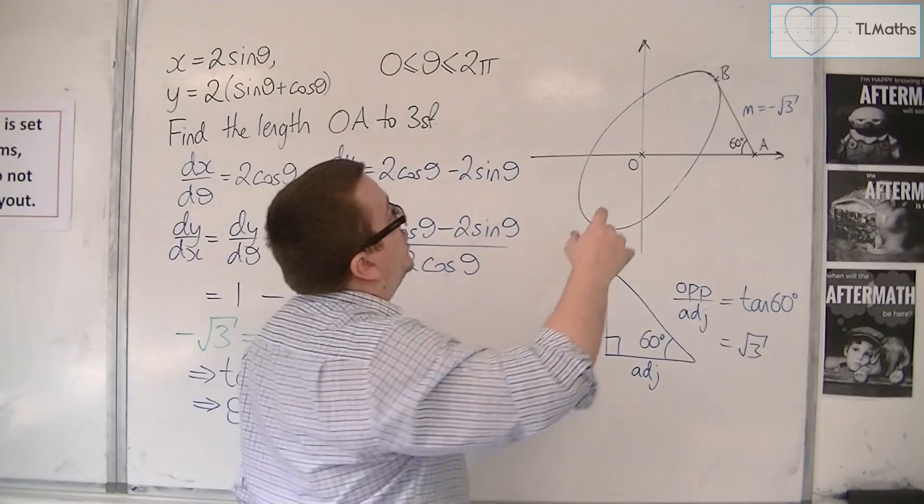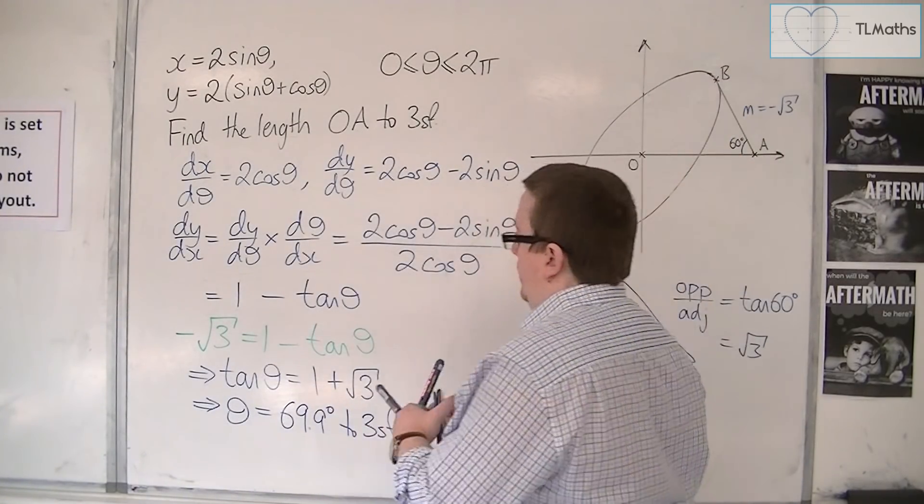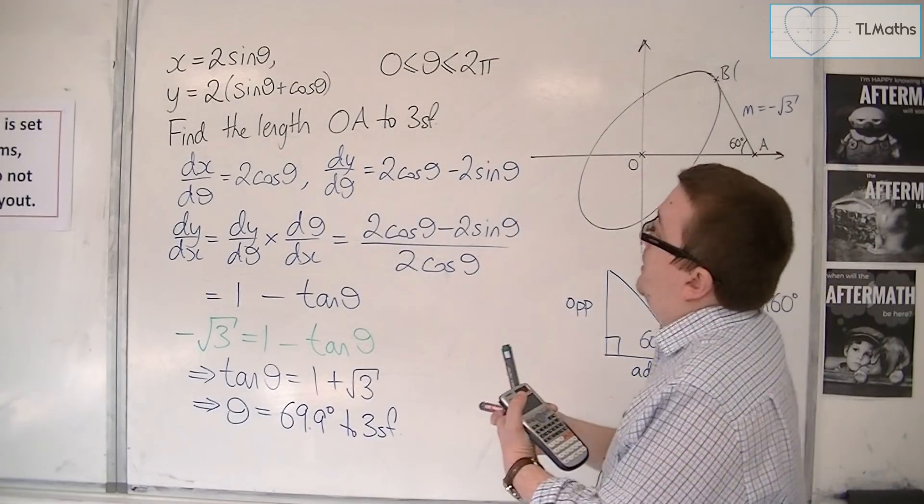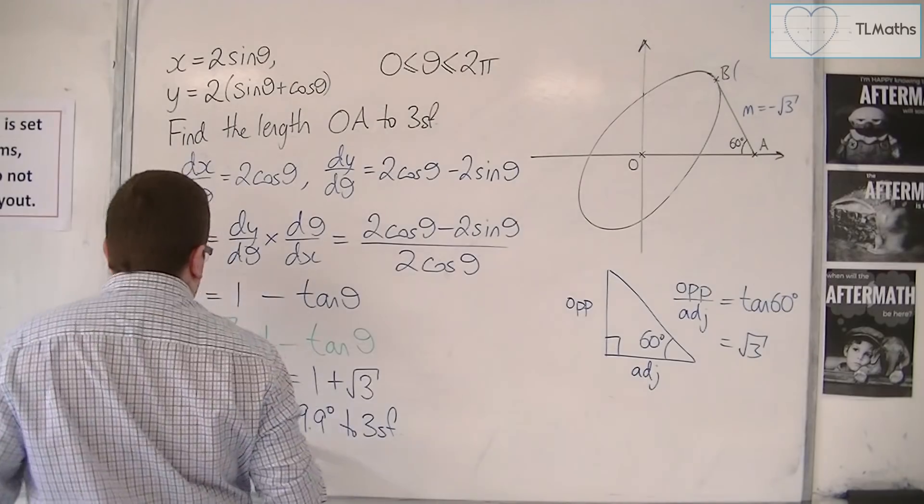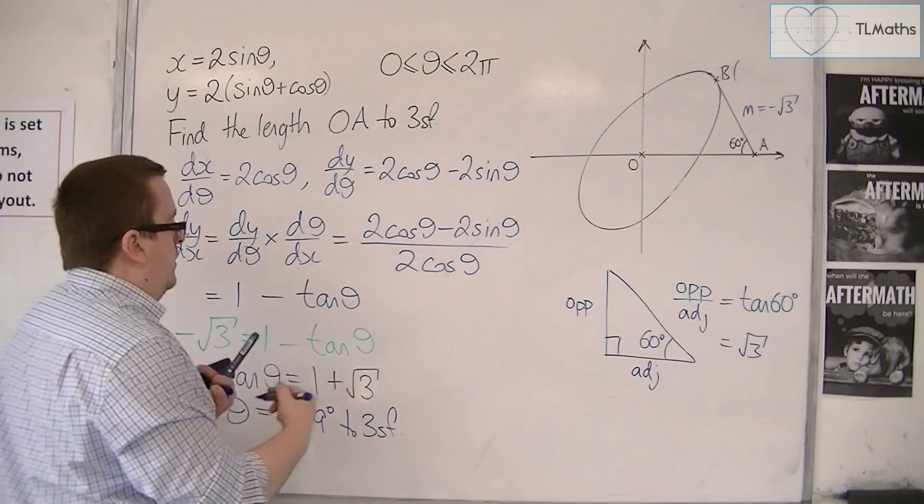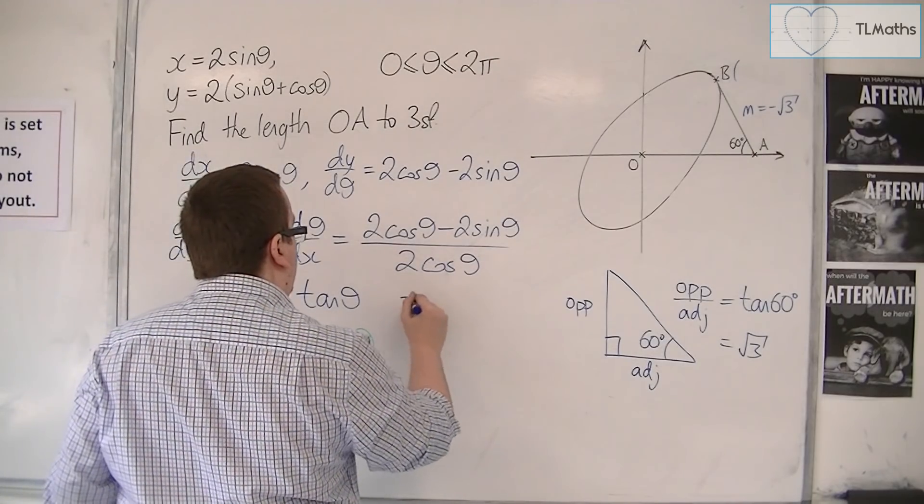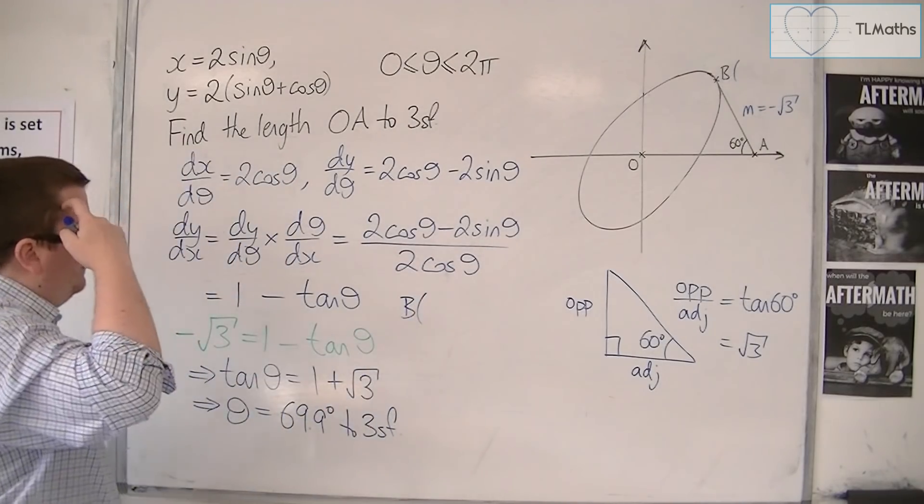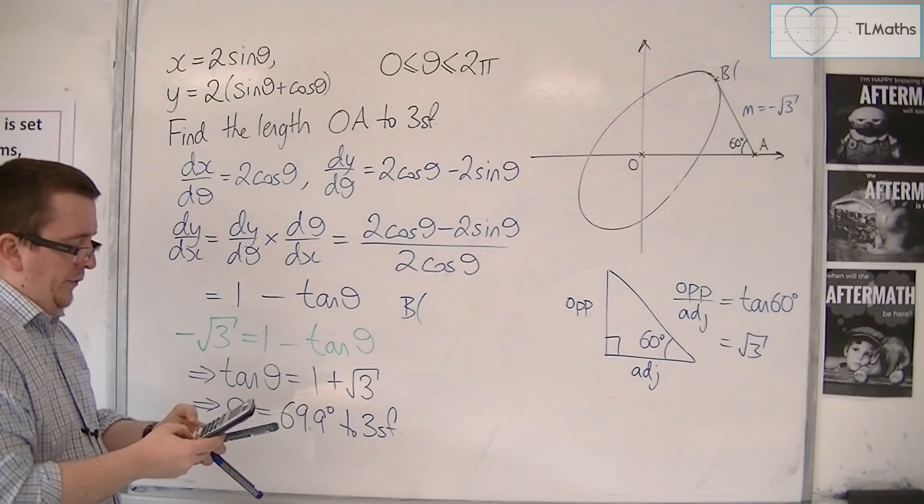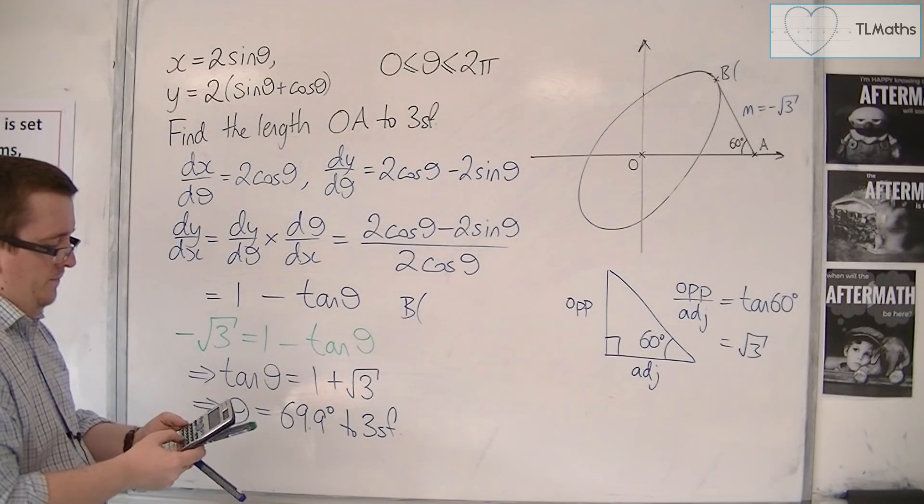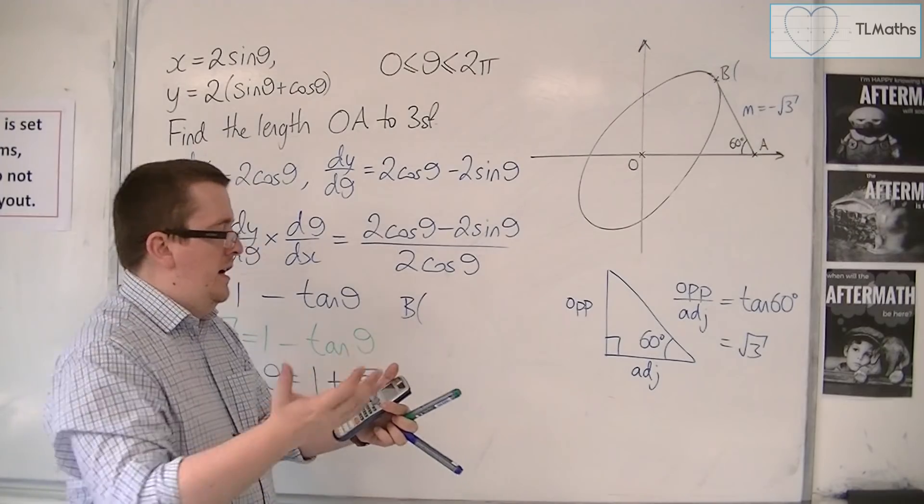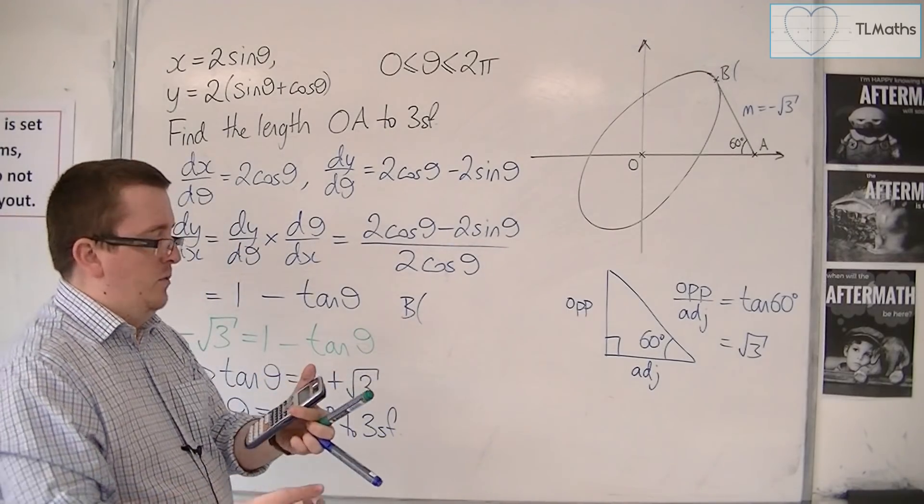What I'm going to do is substitute this theta into the x and y, allowing me to get the coordinates of B. x equals 2 lots of sin theta, which is 1.878 to 3 decimal places.